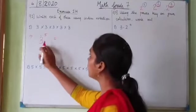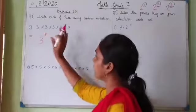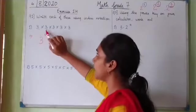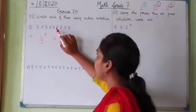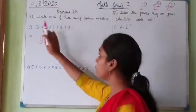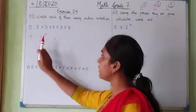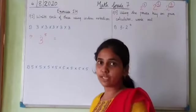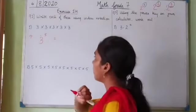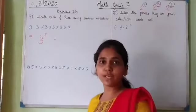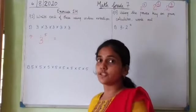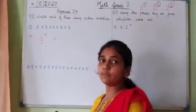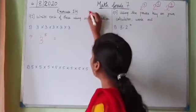If we want to find the value of 3 raised to 5, we can do it two ways: multiply 3 by itself 5 times — 3×3=9, 9×3=27 and so on — or we can find it directly using a calculator. In the previous class, we pressed the x-cubed key to find the cube of a number.